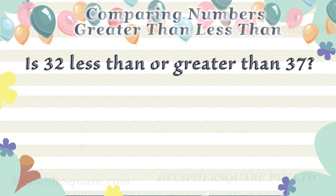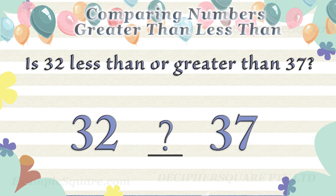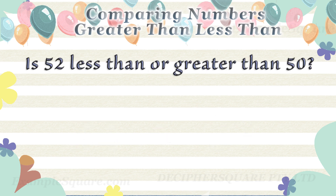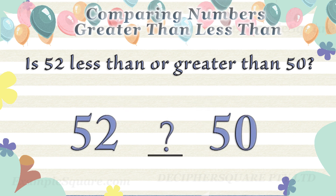Is thirty-two less than or greater than thirty-seven? Thirty-two is less than thirty-seven. Is fifty-two less than or greater than fifty? Fifty-two is greater than fifty.